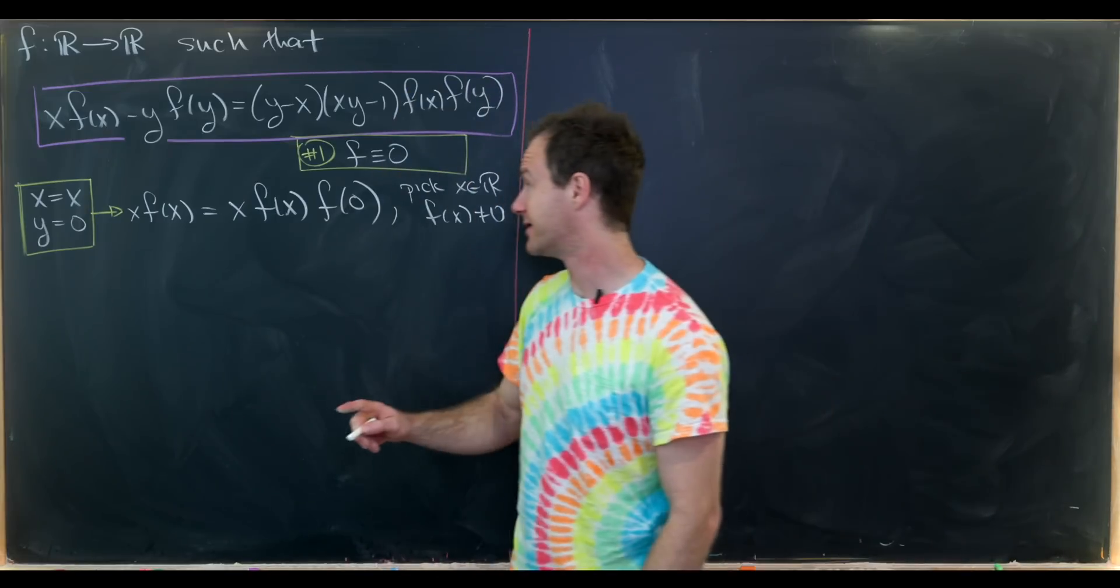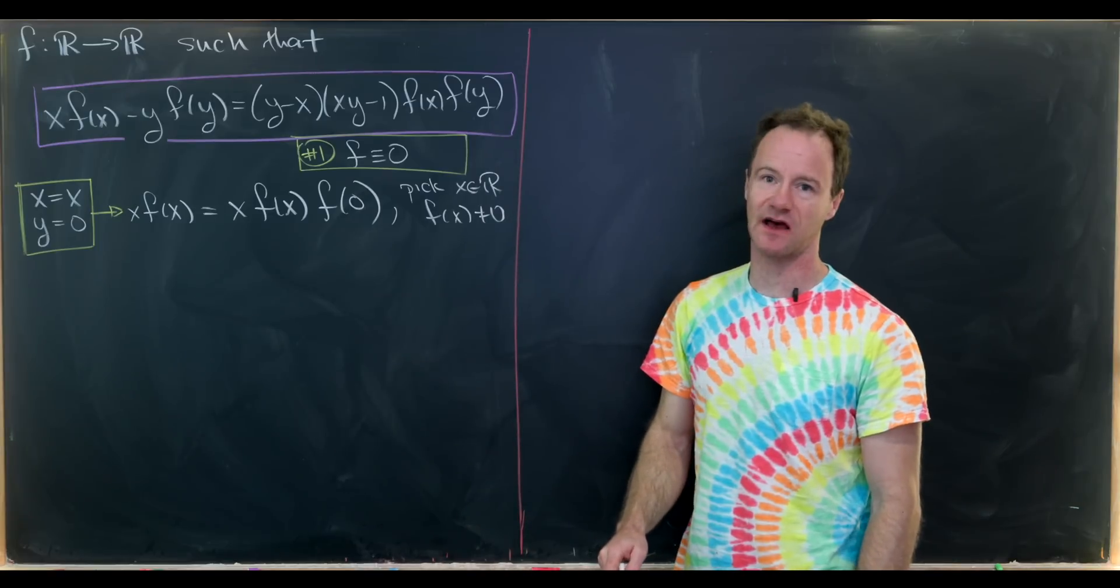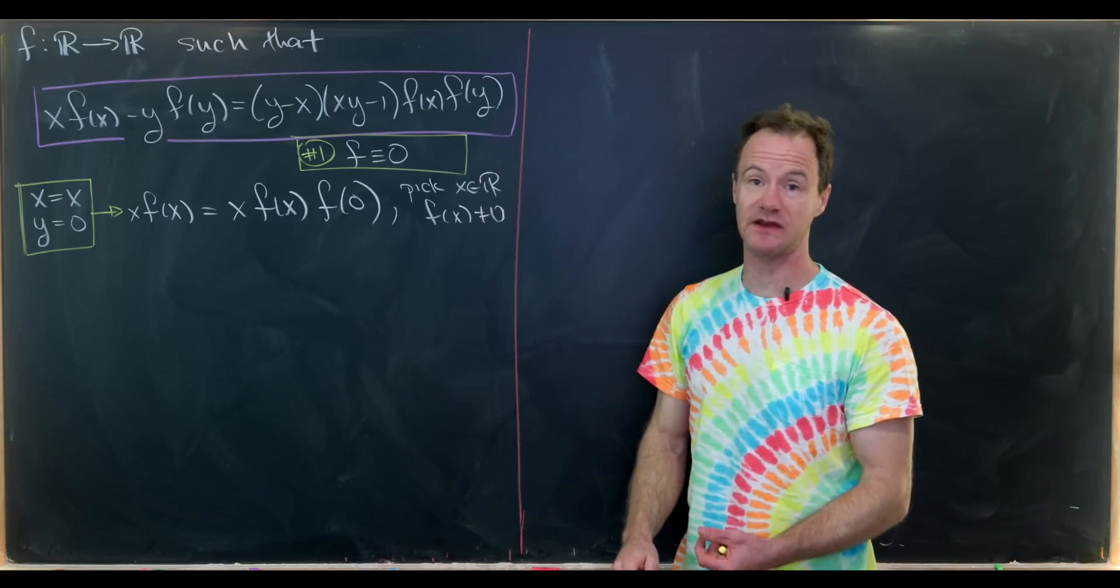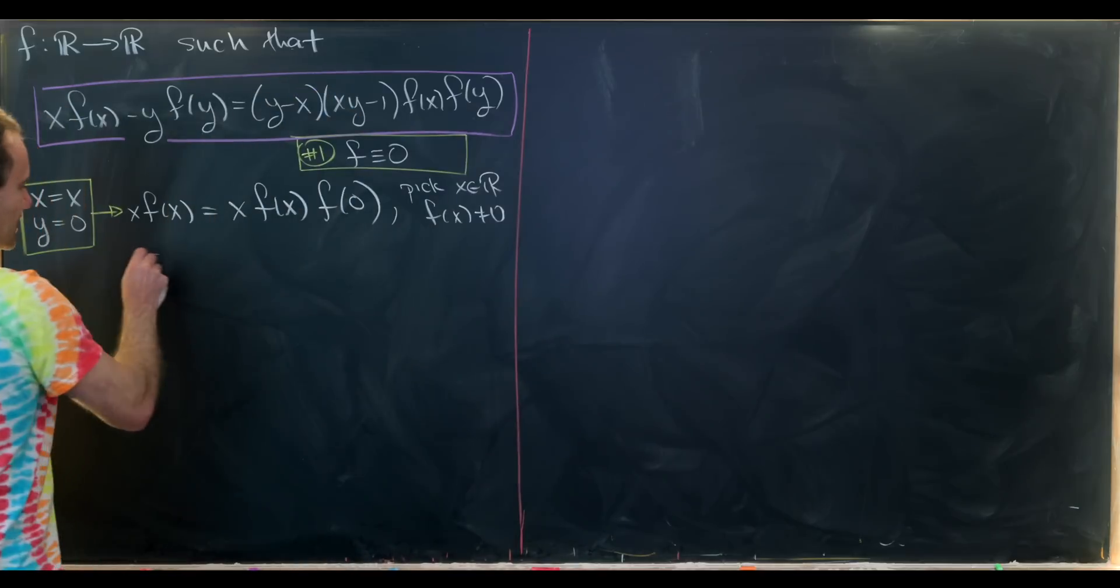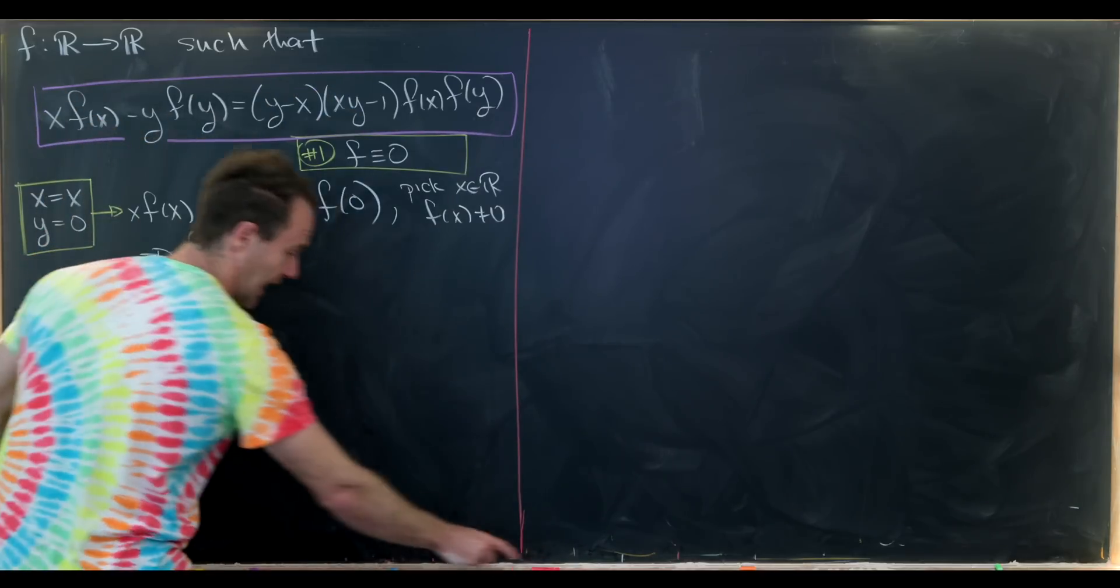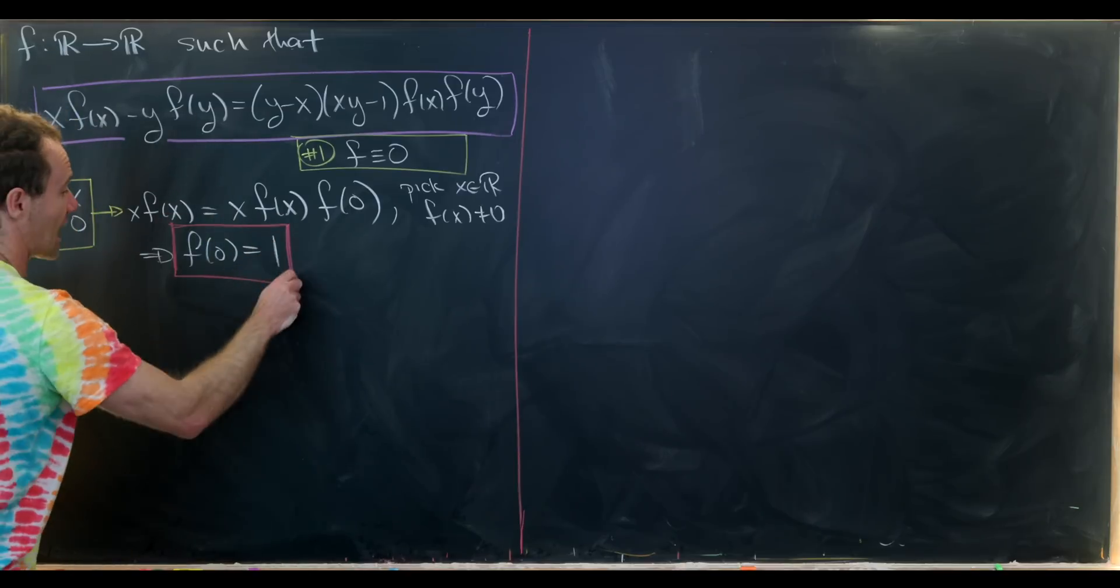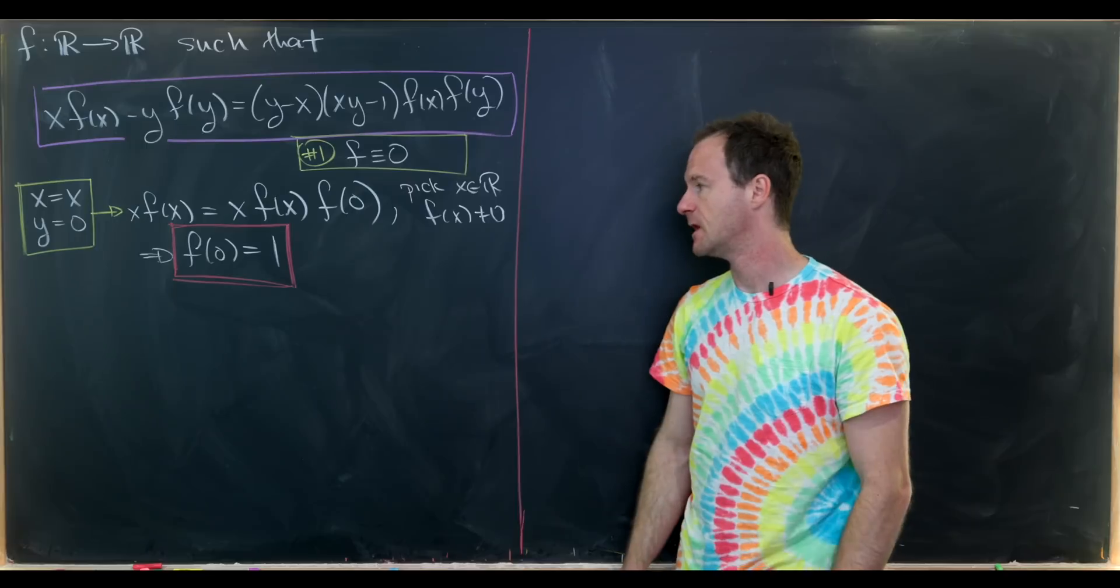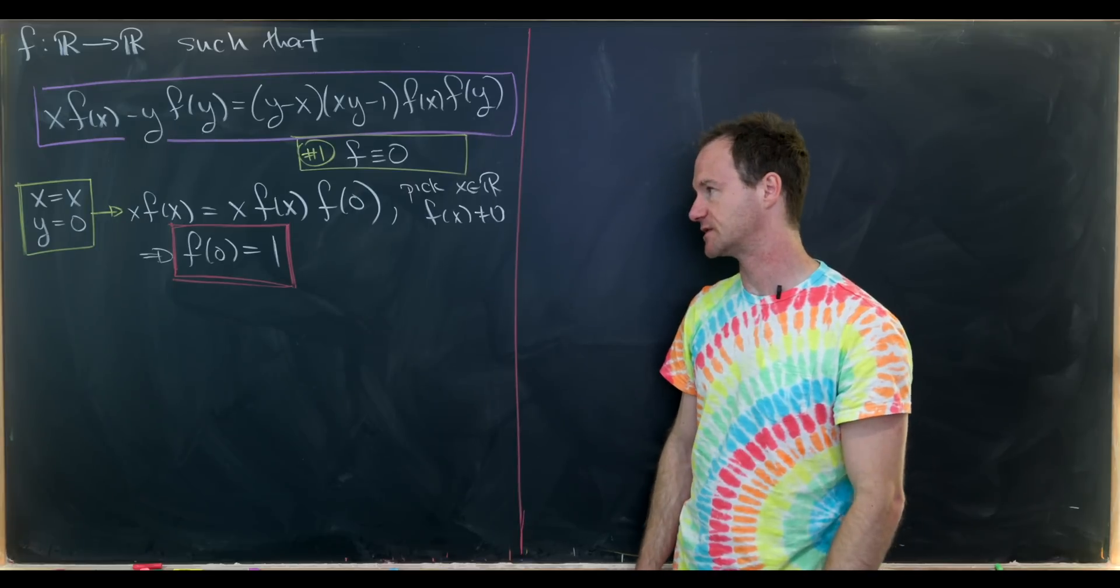So that means we should maybe take this and pick x which is a real number where f evaluated at x is not 0, and we'll use that to divide both sides by xf(x). That'll give us f(0) equals 1. And what we've done is achieved a value for our function under some very limited assumptions.